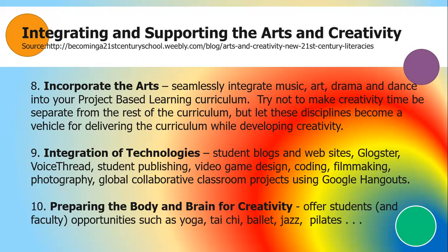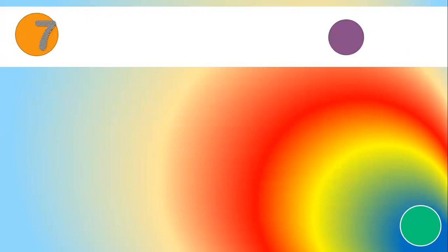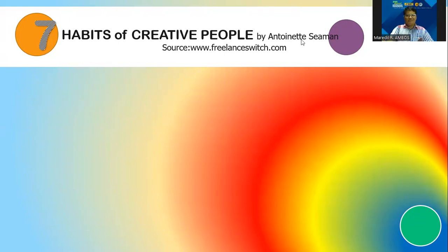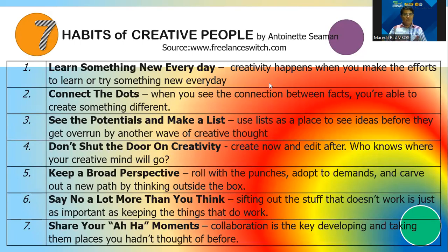The tenth approach is preparing the body and brain for creativity: offer students and faculty opportunities for activities like yoga, ballet, chess, and Pilates. We also have the seven habits of creative people by Antonette Siman. The first habit is to learn something new every day — creativity happens when you make the effort to learn and try something new every day.